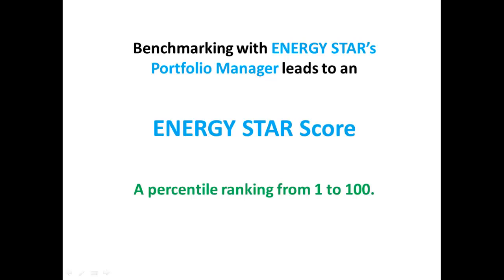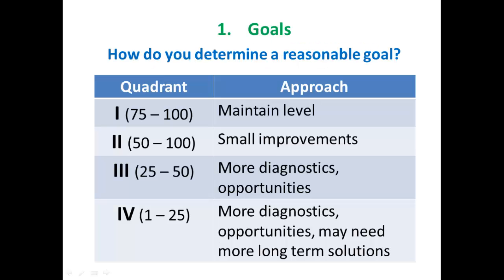When you benchmark with Energy Star's Portfolio Manager, it leads you to an Energy Star score for that school, which is essentially a percentile ranking from 1 to 100. Once you get that score, you'll be able to see where your school falls. For example, if your school scores 75 or higher, your approach to goal-setting might be just to maintain the excellent performance you're already achieving.